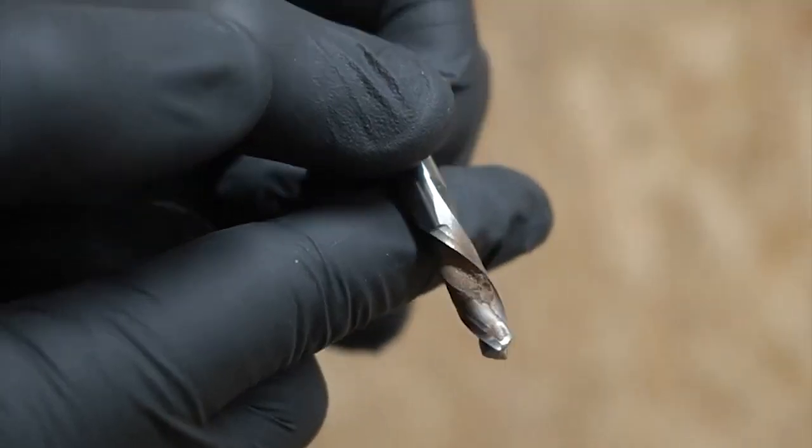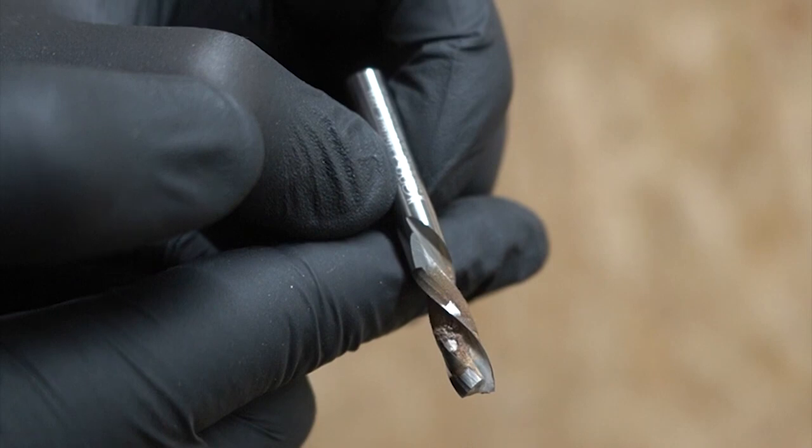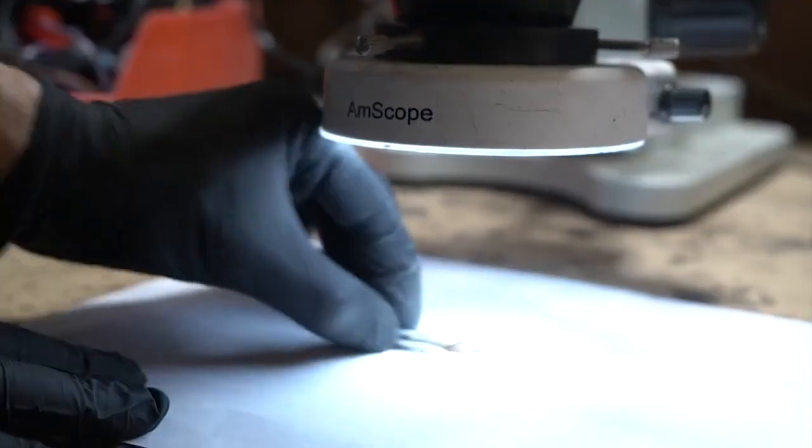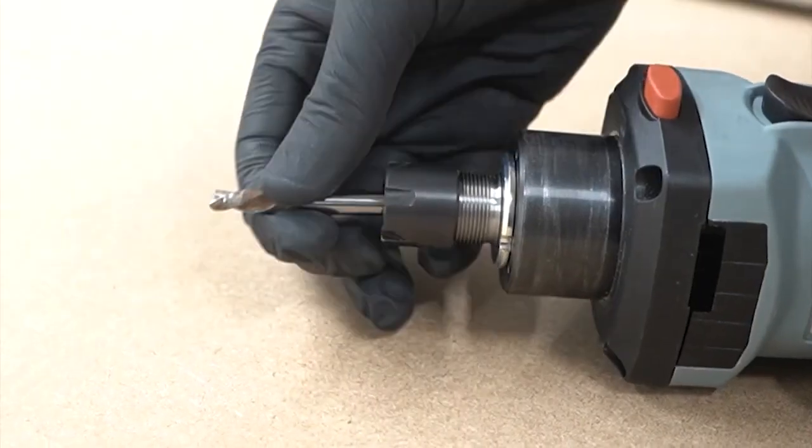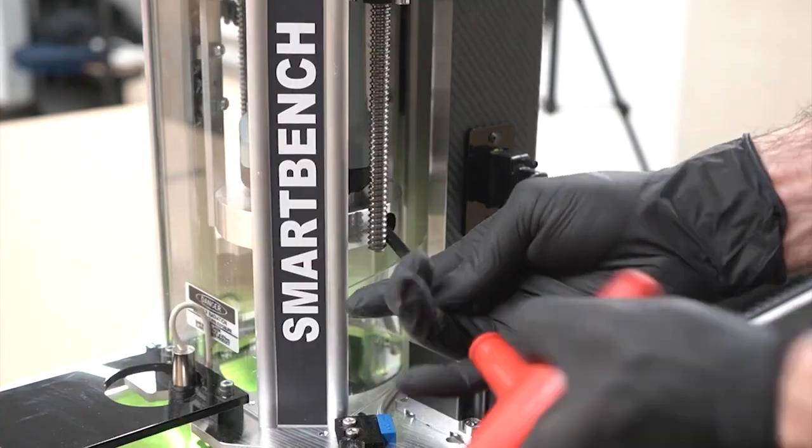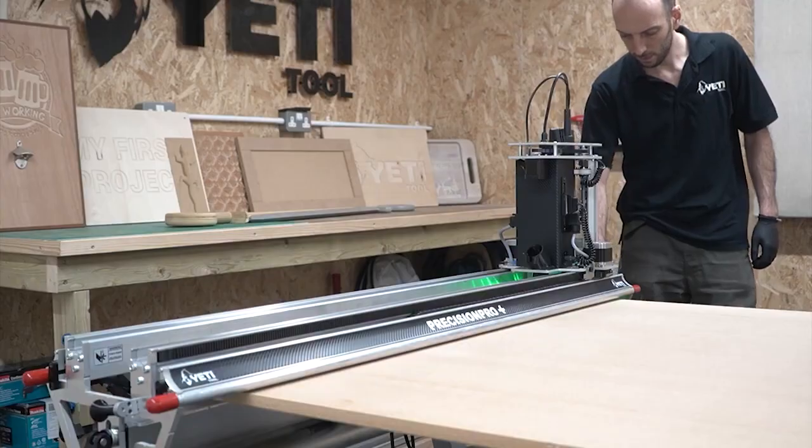For this cut I'll be using a 6mm down cutter that's had some use, so let's put it under the scope and check it out. There's a bit of residue on the flutes and critically we can see some wear underneath the cutting edge there. So this is a real world test for Yeti Pilot. All that remains is we need to get this into our SC2 spindle, put it onto our Pro Plus, and let's get cutting.